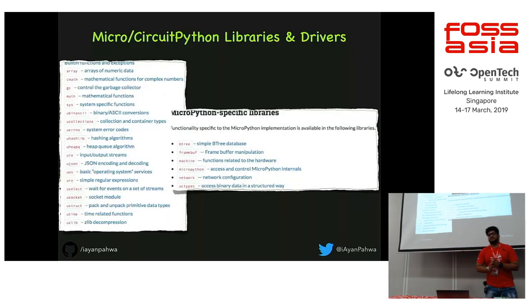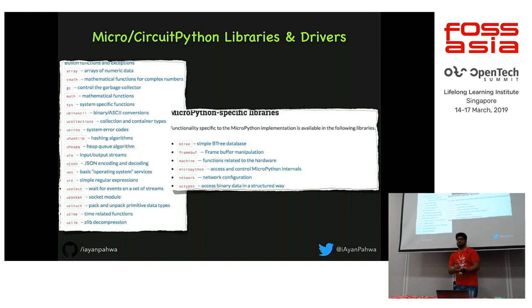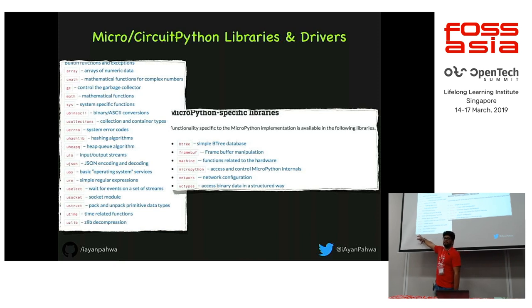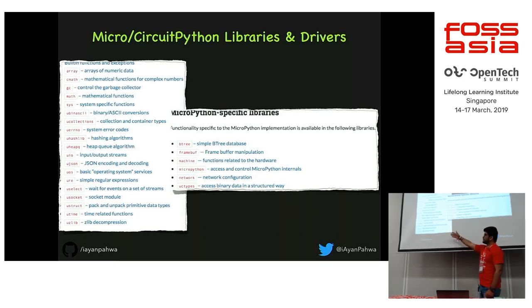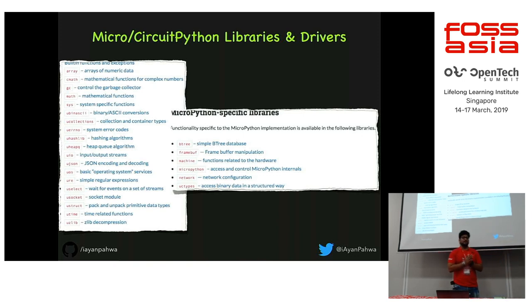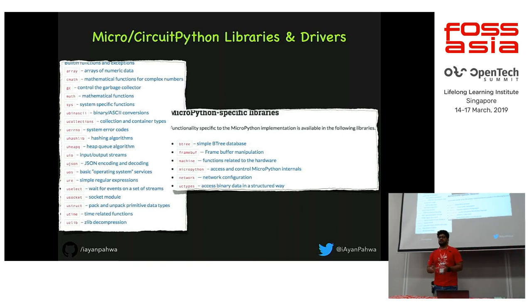These are some libraries supported by MicroPython and CircuitPython. Because native Python libraries were too large and not optimized for constrained environments, the community wrote new versions — you'll see a 'u' prefix, like uZlib. So the existing Zlib library was rewritten as uZlib specifically for MicroPython. You can do compression, time, construct, garbage collection, and more. The best part: you use them just like in Python — import the library and the API is available.